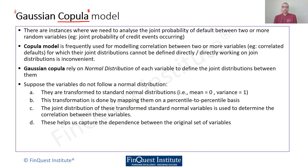Gaussian Copula is a very powerful model. Copula models are required whenever we study the ideas of joint probabilities of random variables. From a credit risk perspective, we can think of this as the joint probability of default between two or more random variables. So if we have two loans, we want to look at it from an overall perspective, and it is the joint probability of distribution which makes a lot of sense. In simple words, joint probability is the probability of events happening together.